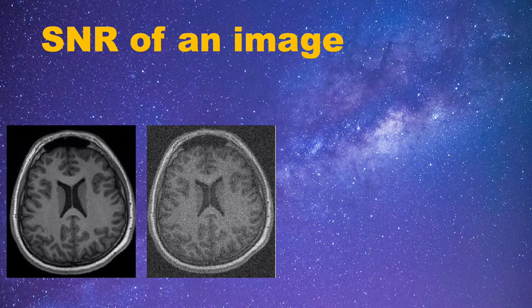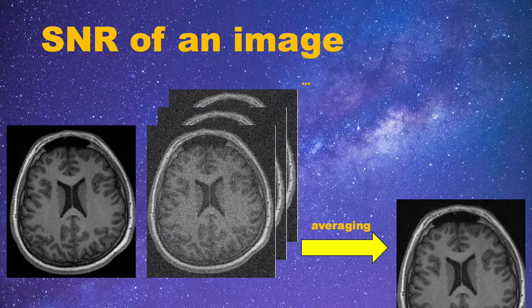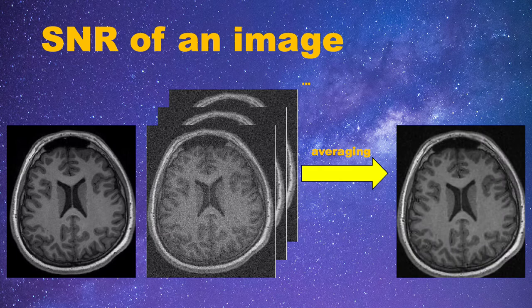To improve the quality of image, the simplest way is to average. For example, you can repeat acquiring this image and then average across them. Then you can get a better image with higher SNR.